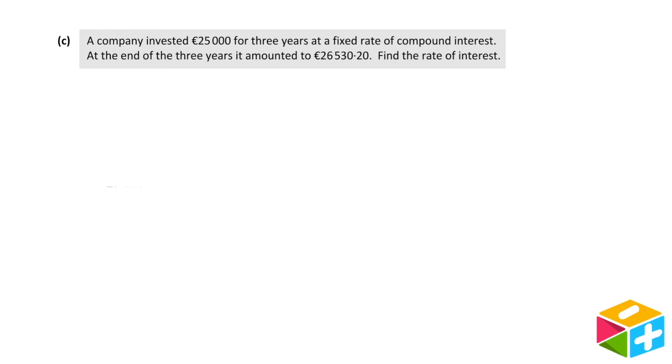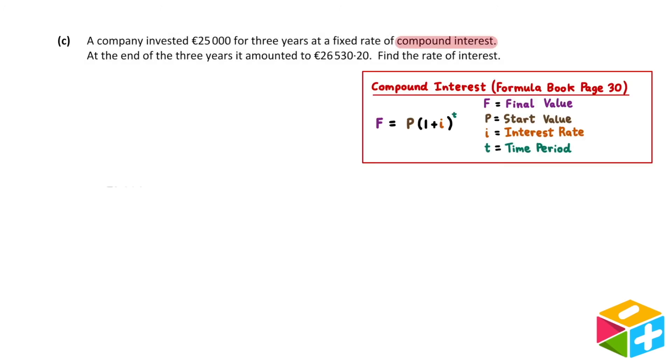A company invested €25,000 for three years at a fixed rate of compound interest. At the end of the three years, it amounted to €26,530.20. Find the rate of interest. Just like part b, this involves compound interest, so we'll want to use our compound interest formula.